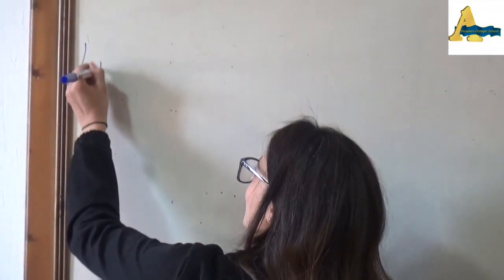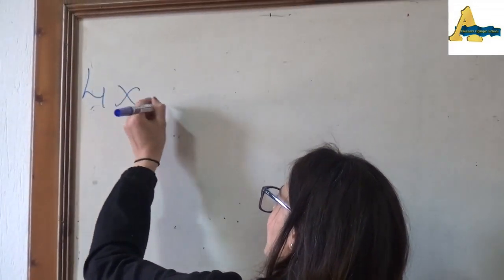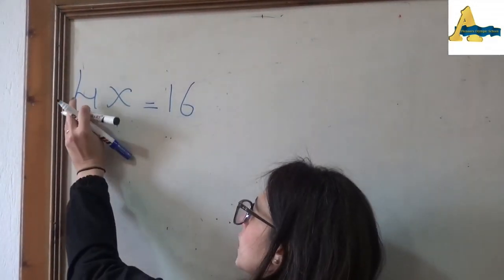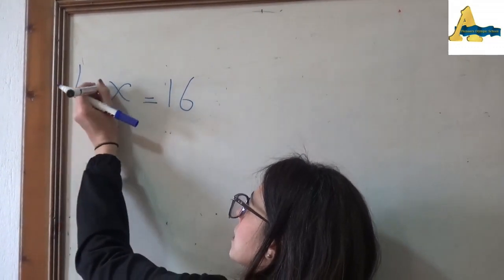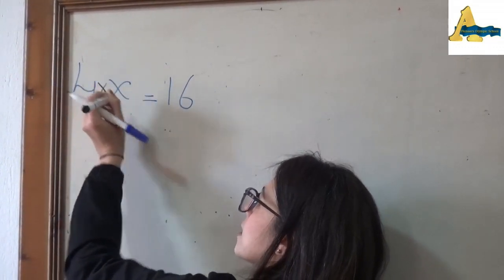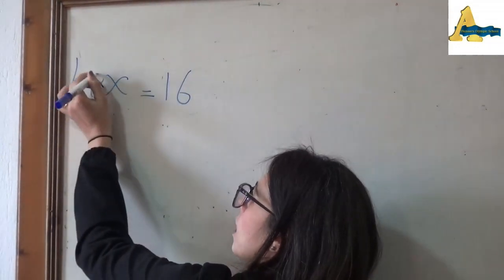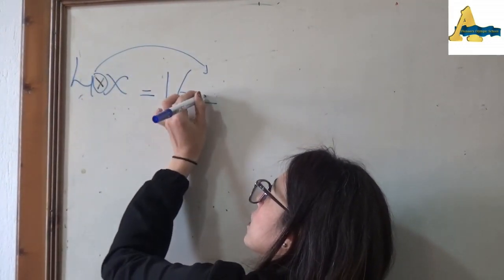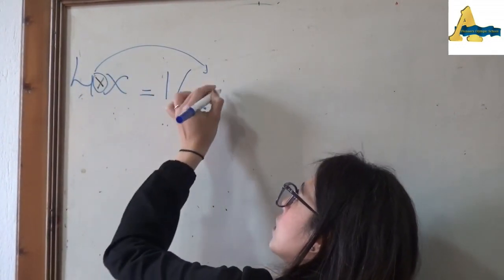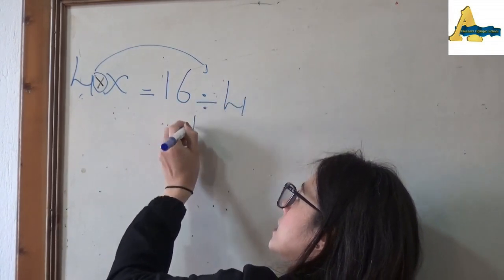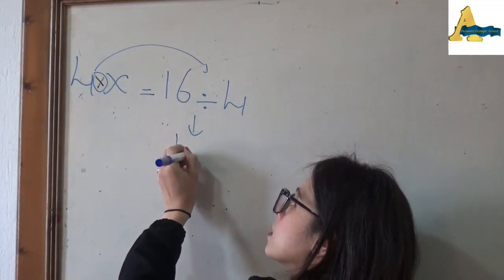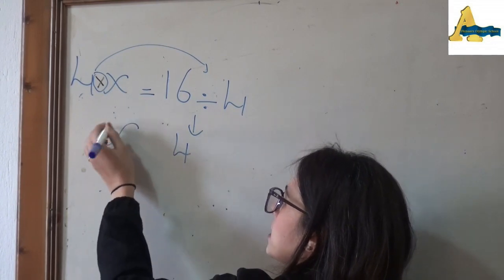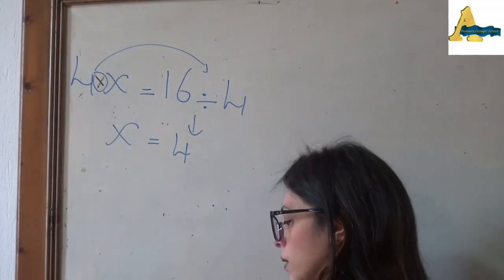If I have 4x = 16: the hidden sign between 4 and x is times. Times is going to go to the other side as divided. Now 16 divided by 4 equals 4, that means x = 4.